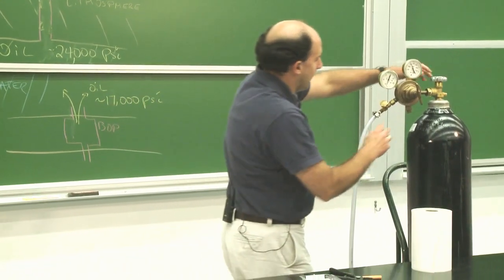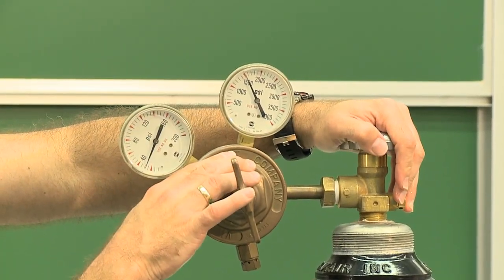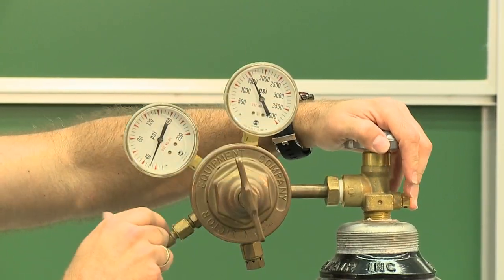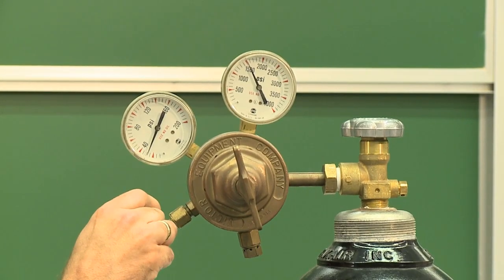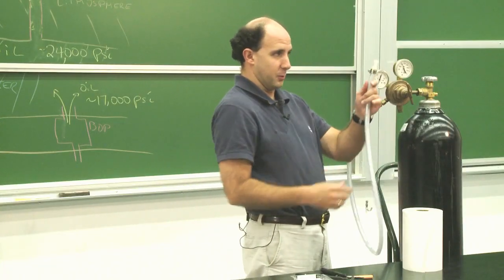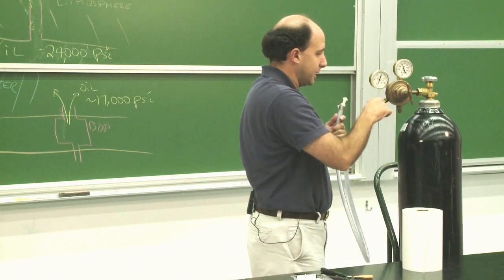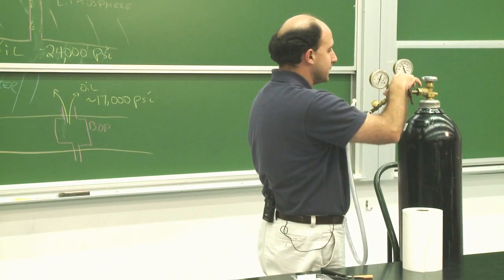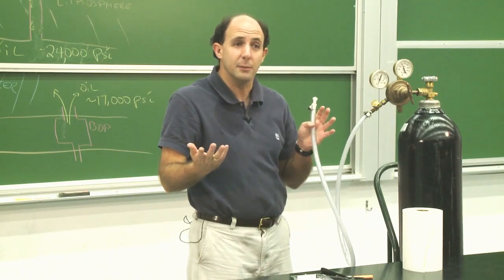The problem now beyond that is that the blowout preventer, if we can pretend that this regulator, it's got this high-pressure gas coming here and then it releases nitrogen gas in this case, but we'll pretend it's oil through this tube. I can check the flow valve here, but the problem is, in my opinion, this blowout preventer was damaged.